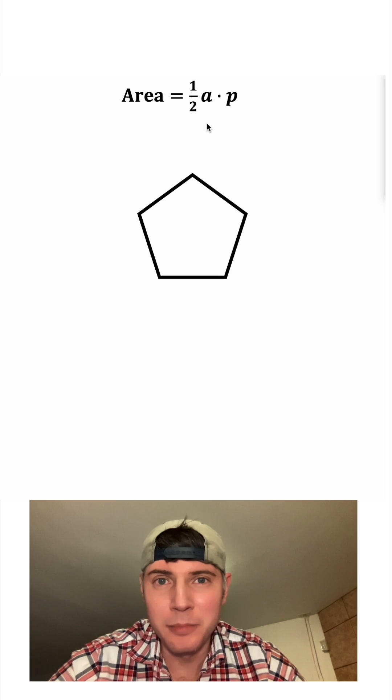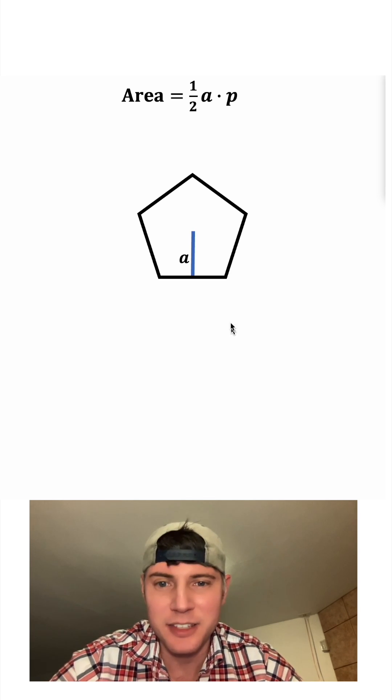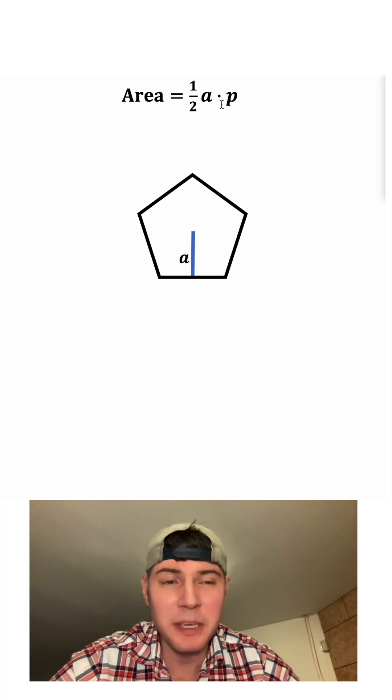And the apothem, or apothem, it can be pronounced either way, is from the center of your polygon to the midpoint of one of the sides. That is the apothem. And then the P stands for perimeter.